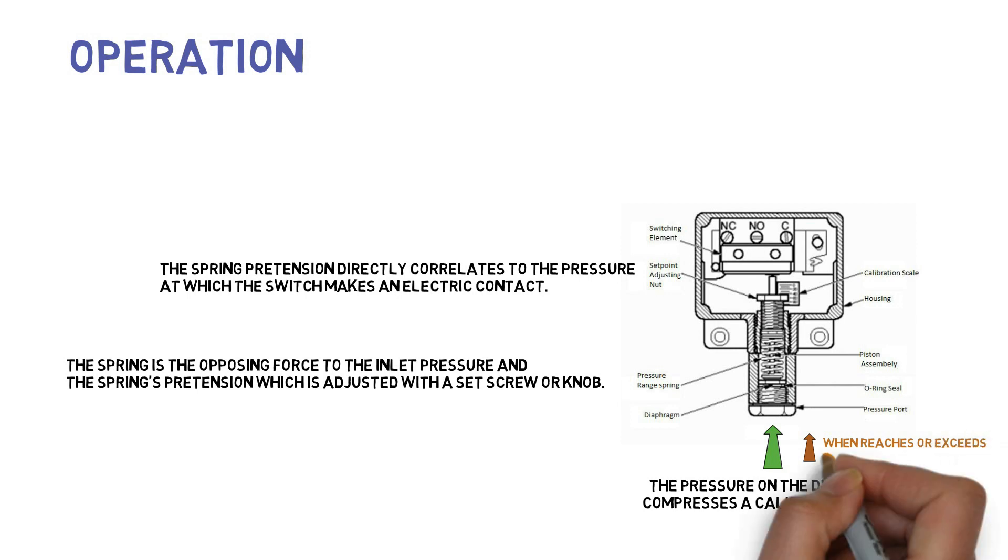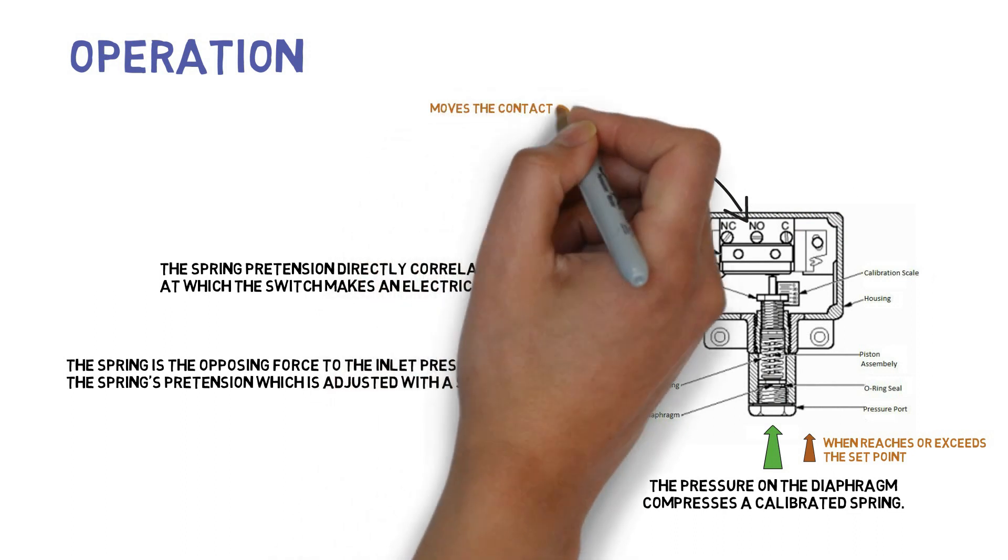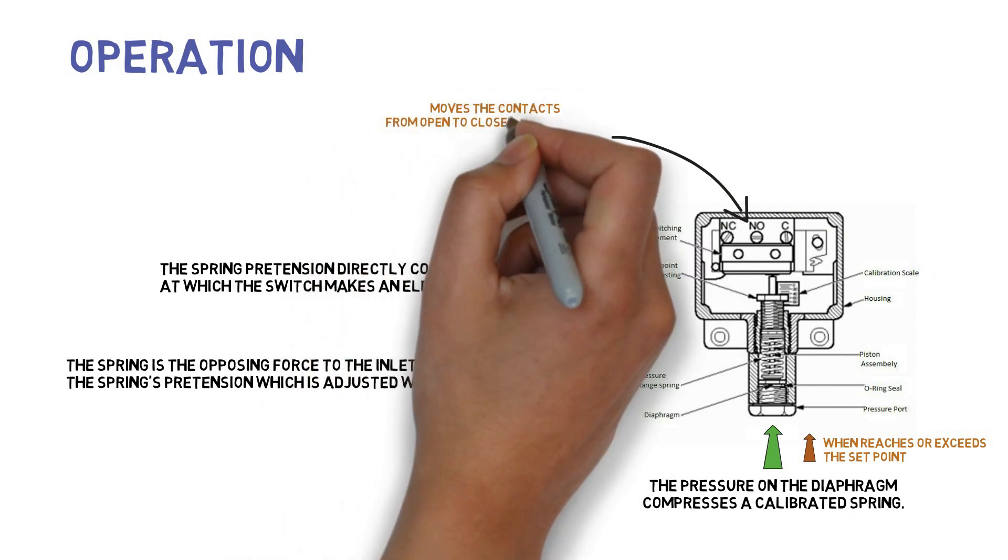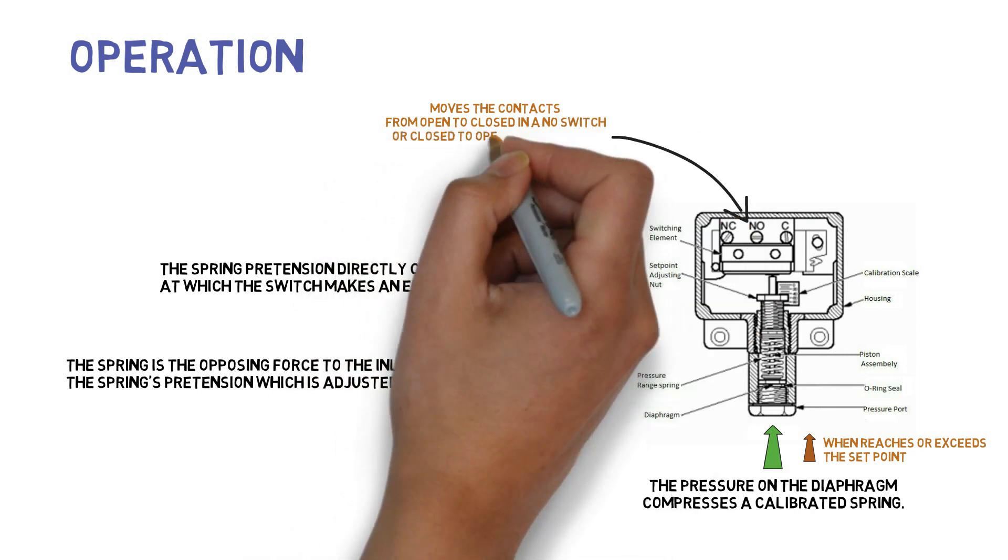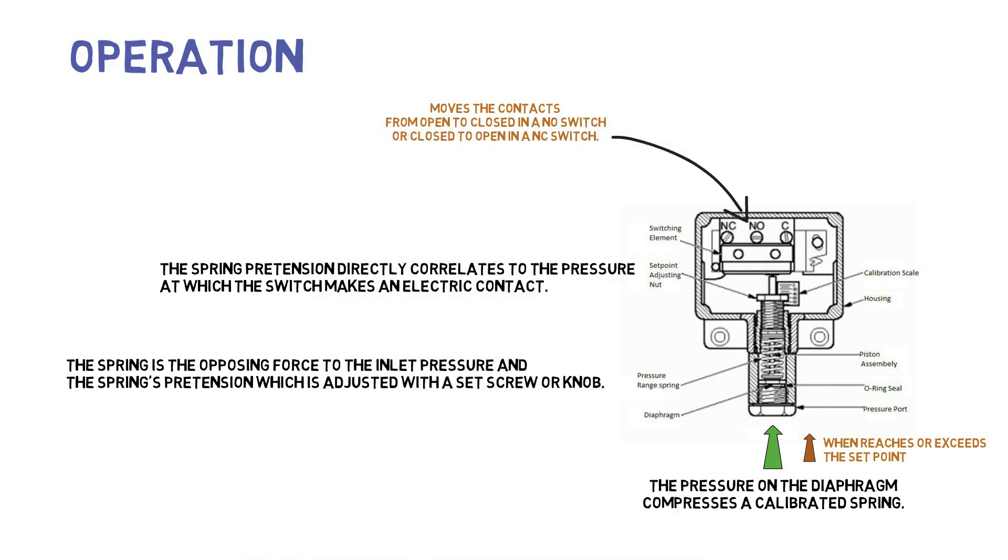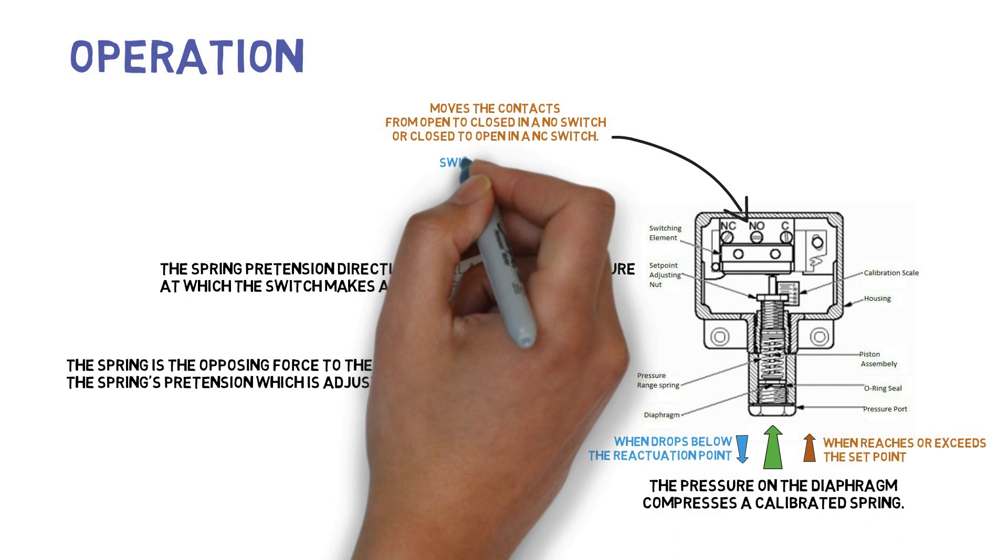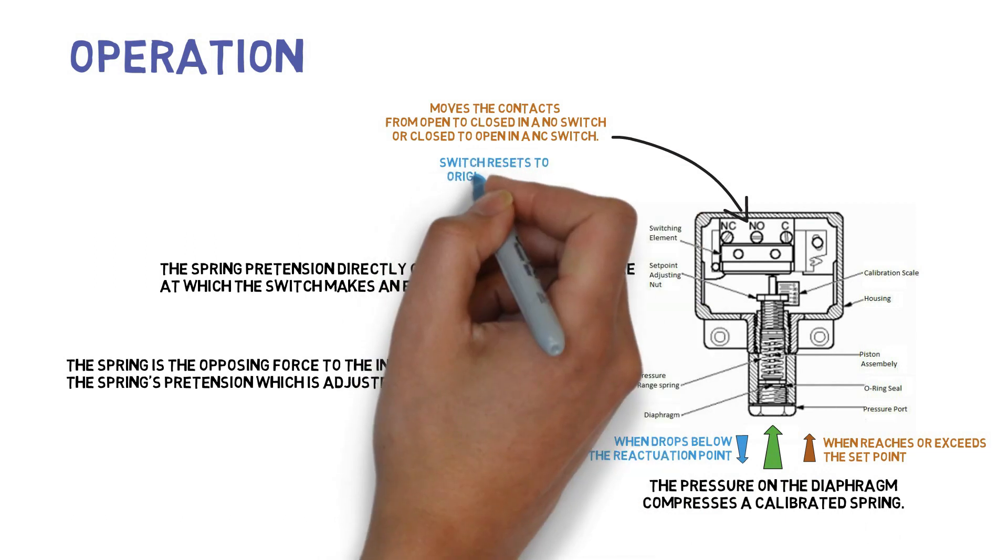When the pressure spring tension reaches or exceeds the set point, the switch moves the contacts from open to closed position in a normally open switch, or closed to open position in a normally closed switch. When the pressure drops, the switch resets to its original state.